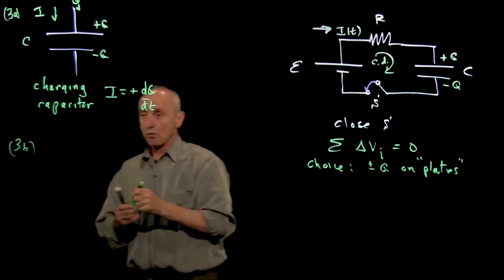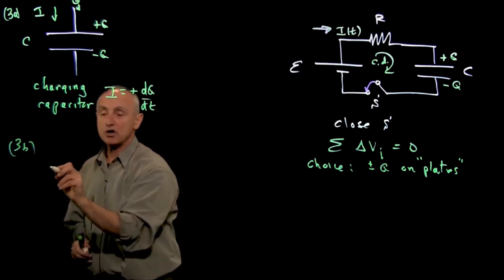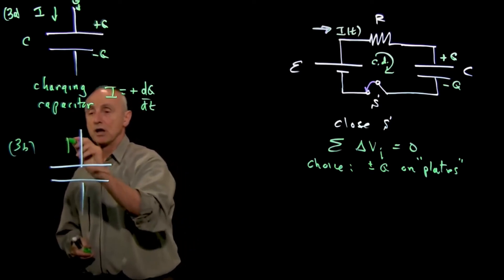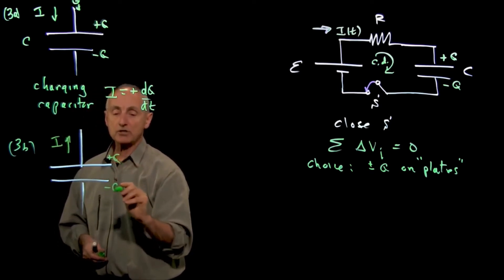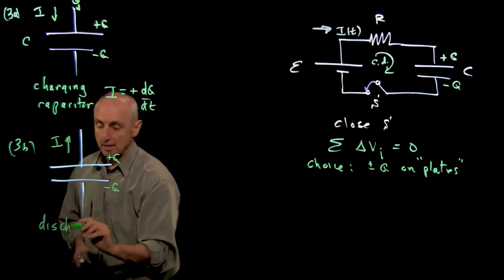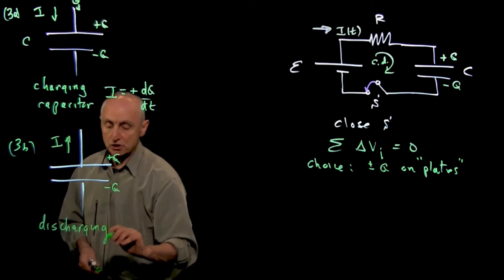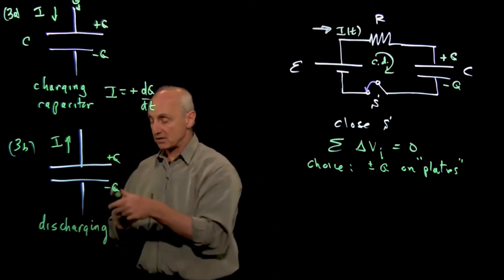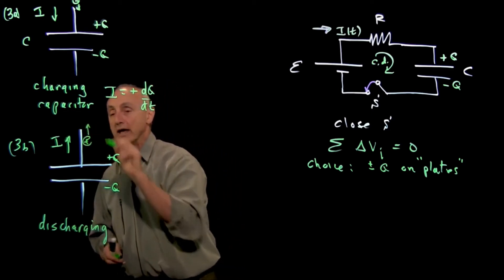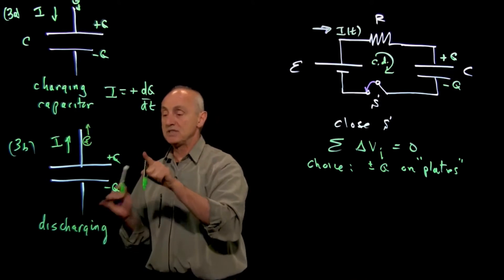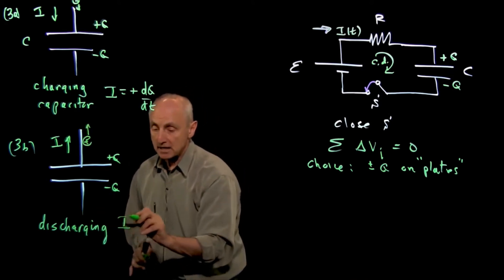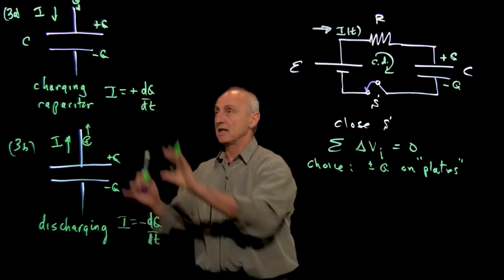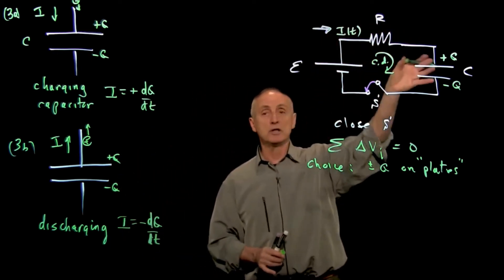Our next convention is what would happen if the capacitor were discharging. Here's our capacitor with conventions: I, plus q, and minus q. This is what we call discharging. Think of positive charges flowing away — the positive charge on the plate is decreasing. So I, in this case, is minus dq/dt. Notice the difference in signs. That's a consistency condition with what we call positive current.